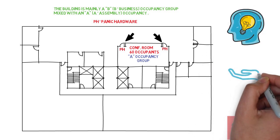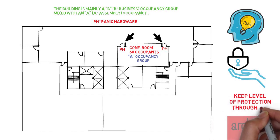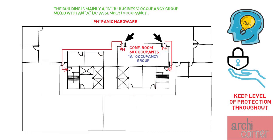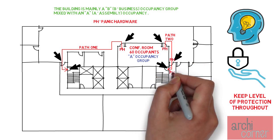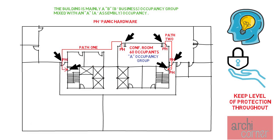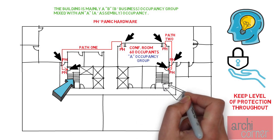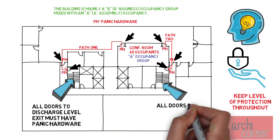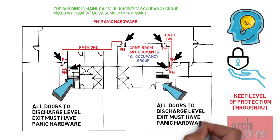One thing to keep in mind is that once you reach a certain level of protection you cannot pass into another room or area with a lower level of protection. How does this affect panic hardware? Once you're in a room that requires panic hardware, all doors on your egress path of travel all the way to your exit discharge must have panic hardware. In this example, the two egress paths each lead to a different stairway, so every door on the egress path — including the door leading to the stairway — needs panic hardware. All doors on different floors along the entire egress path also require panic hardware.